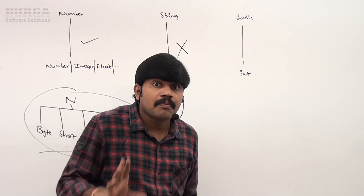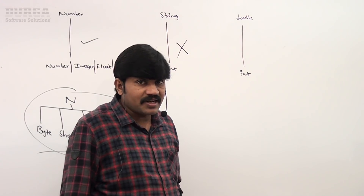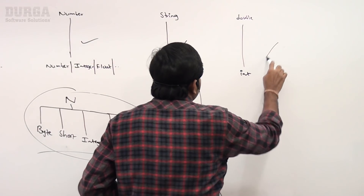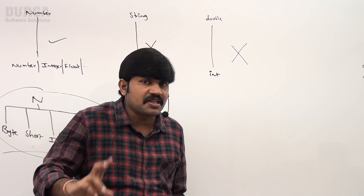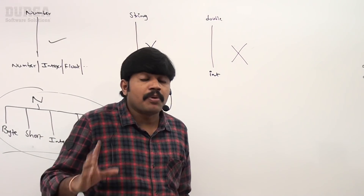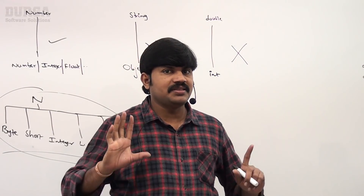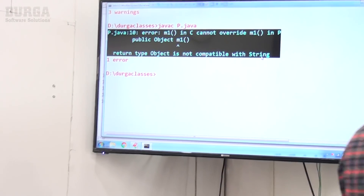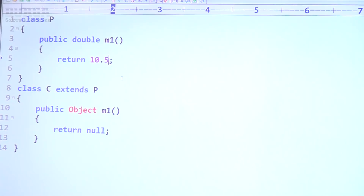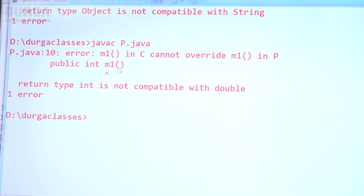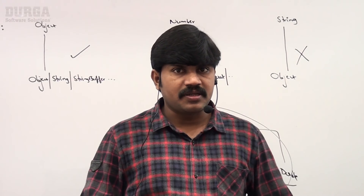Next: covariant return type concept is applicable only for object types, not for primitives. If I take double in the parent and int in the child, the compiler will give an error. For primitive return types, whatever the parent return type is, the child method return type must be compulsory same. Covariant return types apply only for object types.